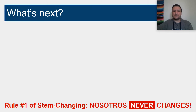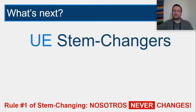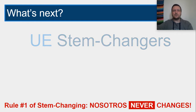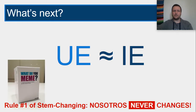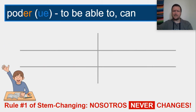So what's next? UE changers — that's the one I want to focus on first. The good news is UE changers are more or less the same as IE changers. Let's take a look at the verb poder, 'to be able to.' It is an ER verb and a UE stem changer. Pause the video, draw a verb tree, and try to fill out the forms of poder.